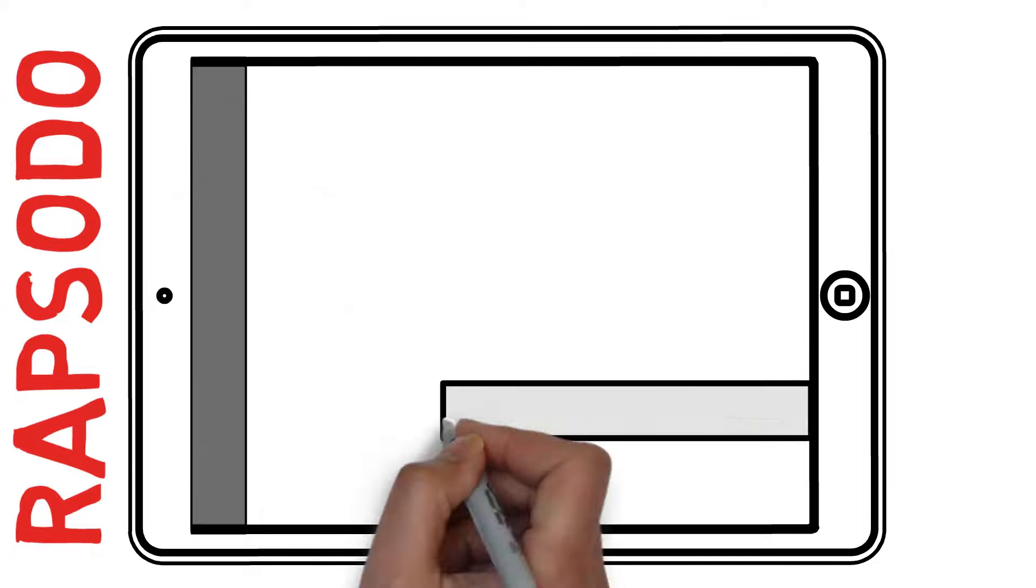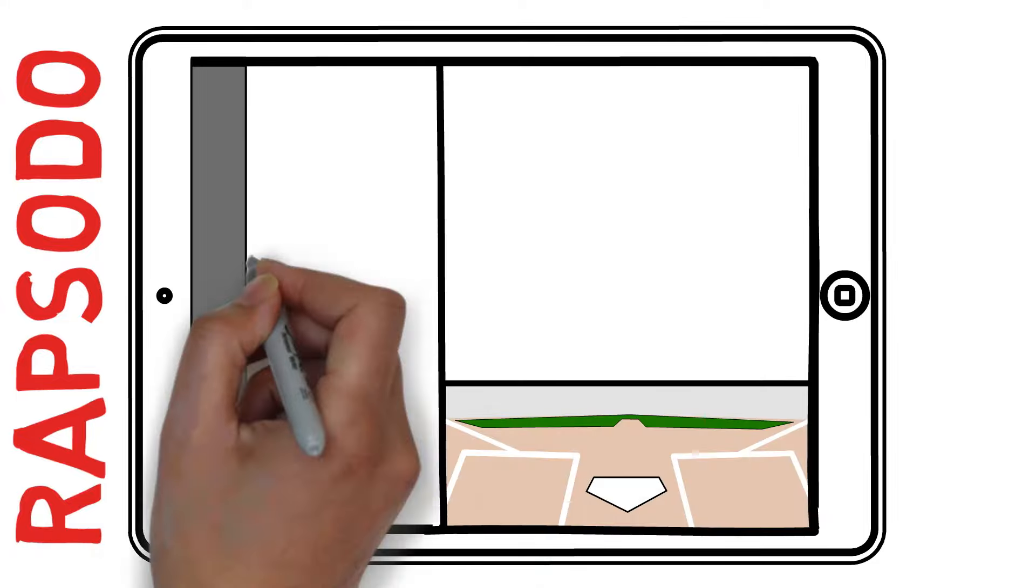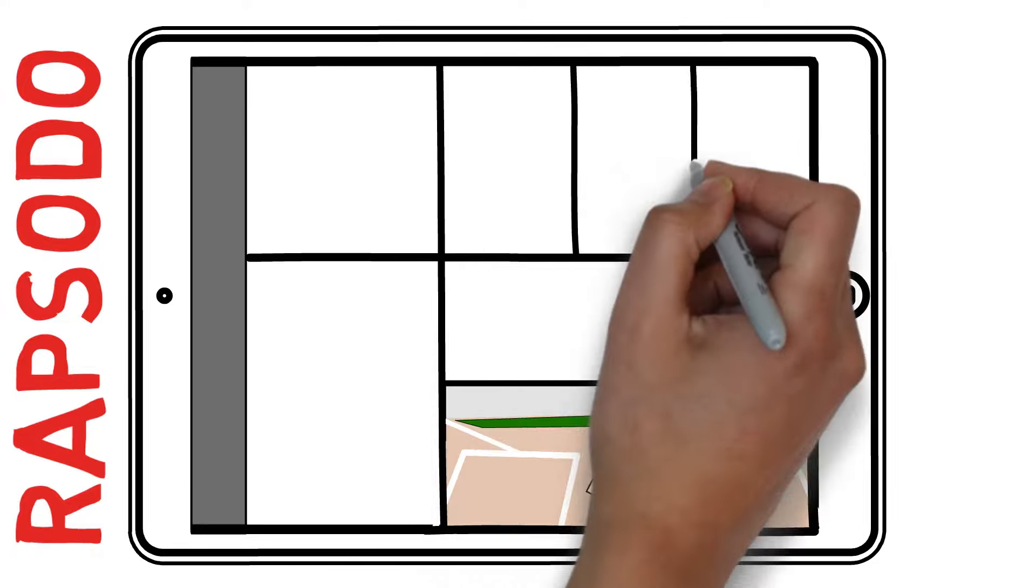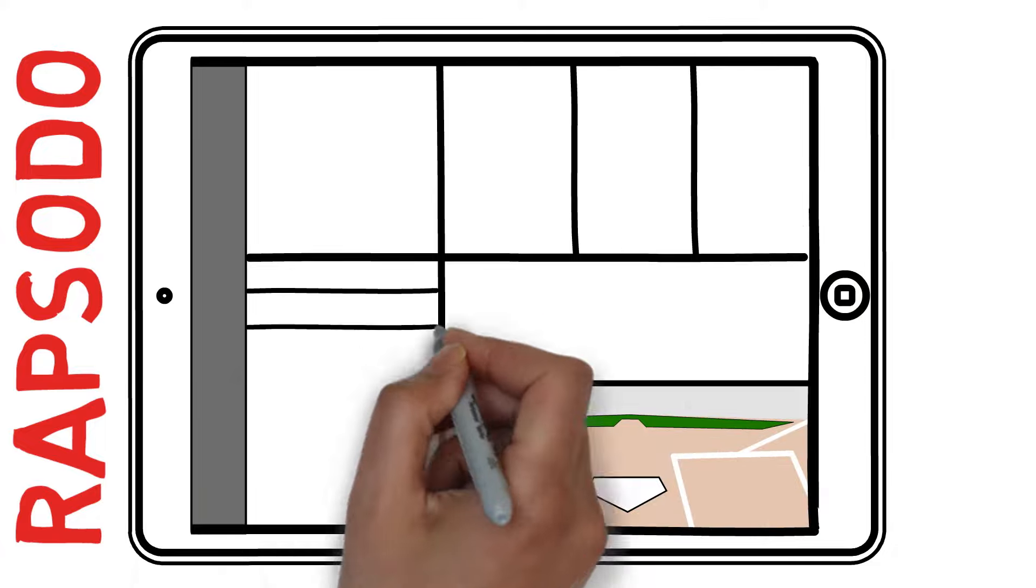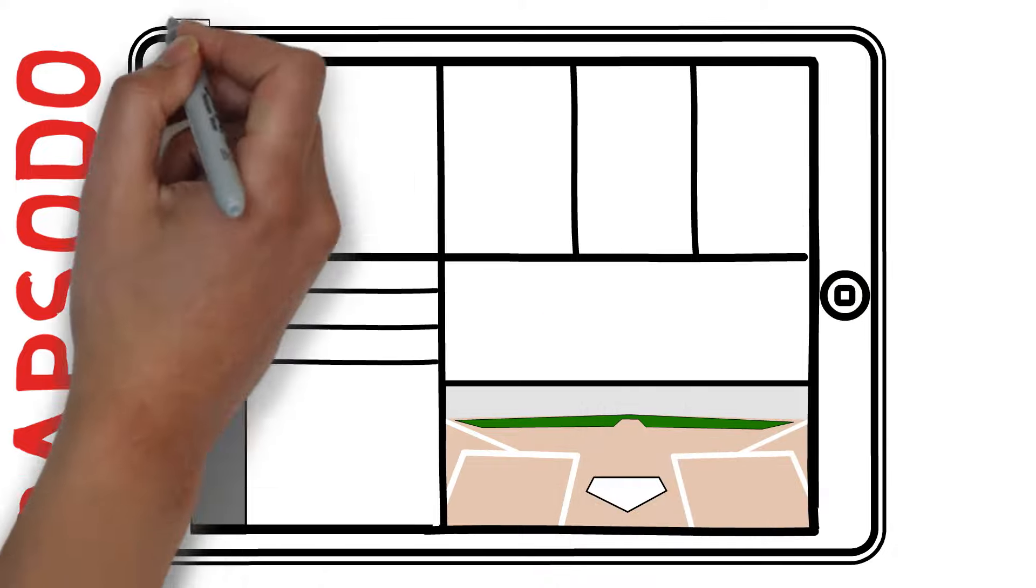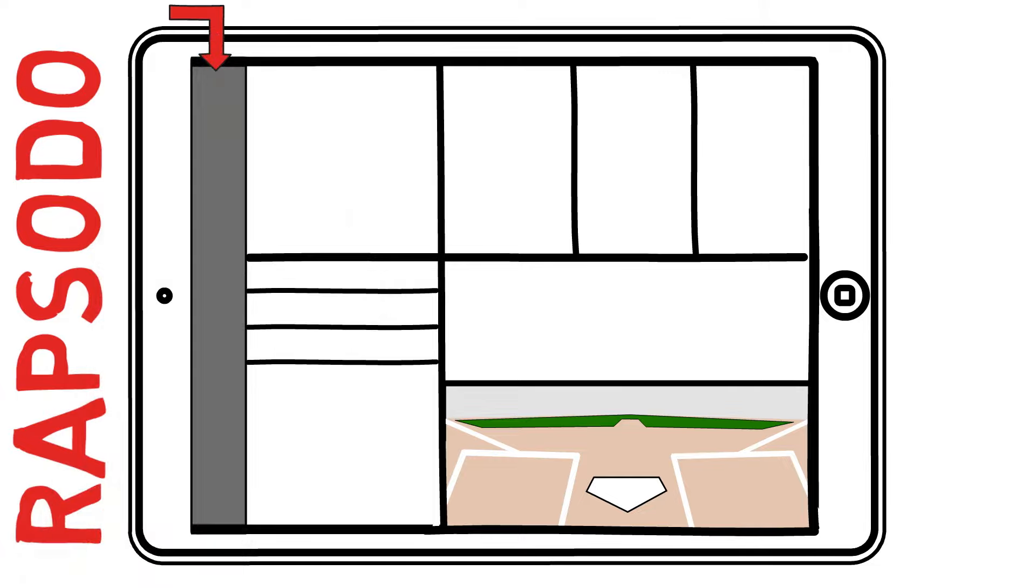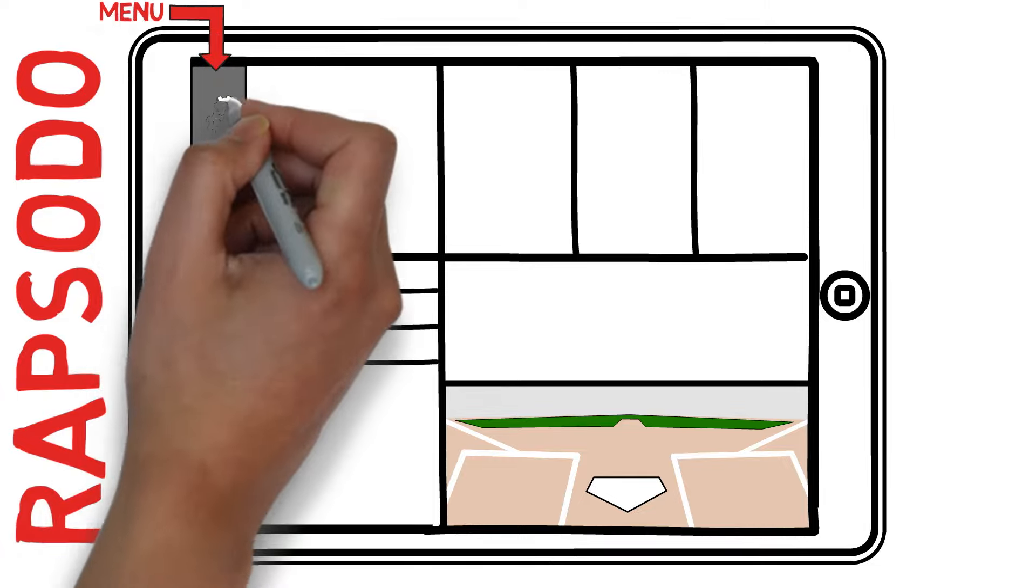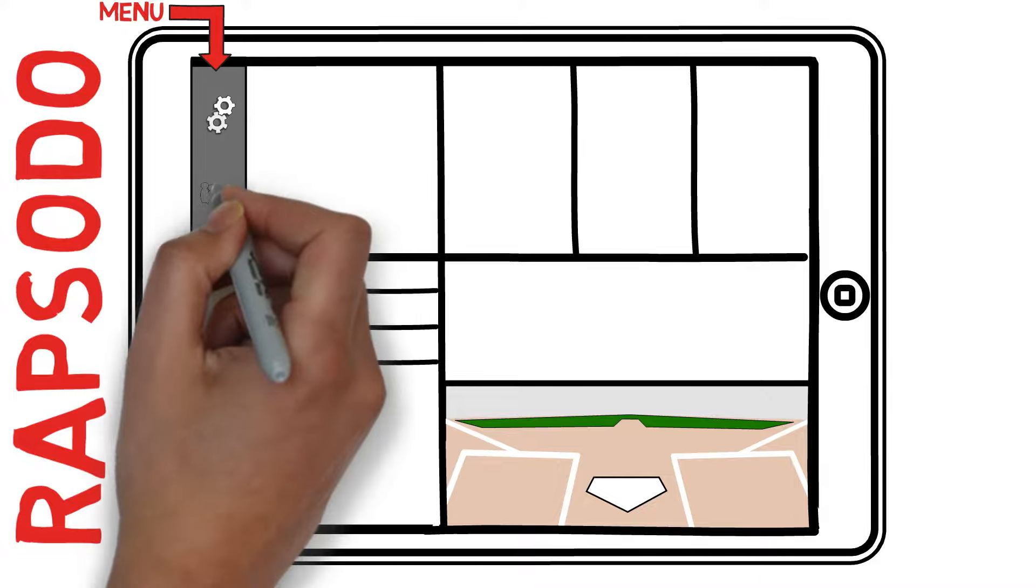The Rapsodo hitting dashboard is an application on an iPad. The best way for me to help break down these new data points is to show you what you'll be seeing once you open it up for the first time. We will break it down section by section here. Starting with the menu along the left side.